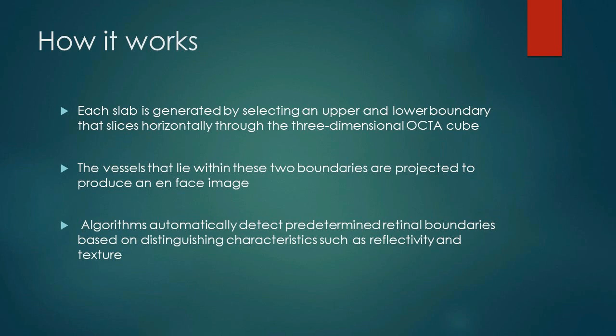To understand segmentation errors, we have to understand how OCT angiography works. Each slab is generated by selecting an upper and a lower boundary that slices horizontally through the three-dimensional OCTA cube. The vessels that lie within these two boundaries are projected to produce an en-face image. Algorithms automatically detect predetermined retinal boundaries based on distinguishing characteristics such as reflectivity and texture.